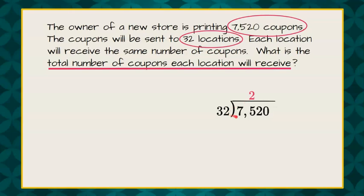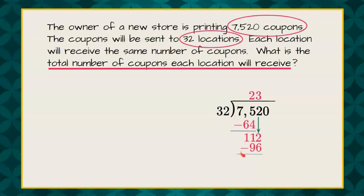2 times 32 is 64. So we're going to subtract 64 from these first two digits, 75. 75 subtract 64 is 11 — 5 subtract 4 is 1, 7 subtract 6 is 1. Now 32 does not go into 11, so we're going to bring down our 2. 32 goes into 112 three times. 3 times 32 is 96. So we're going to subtract 96 from 112.